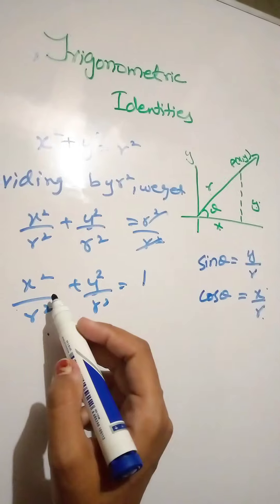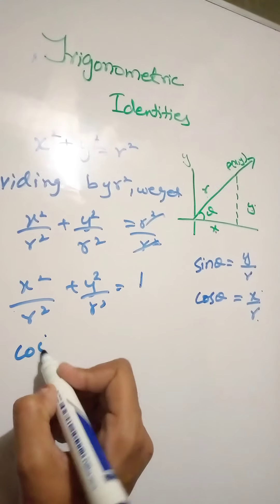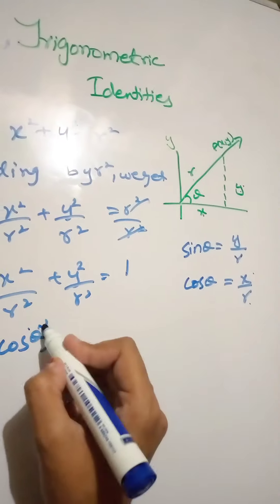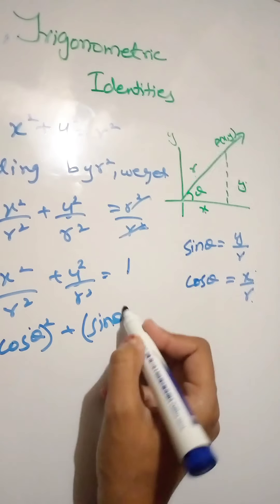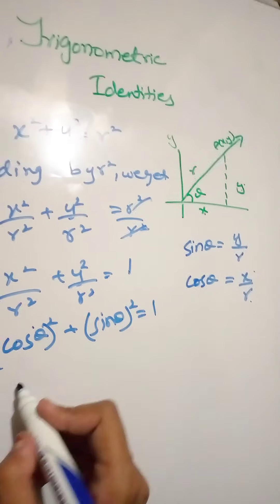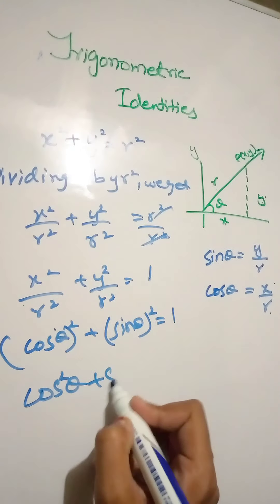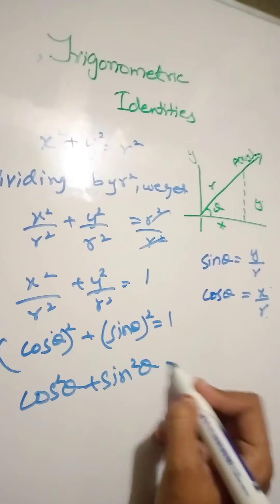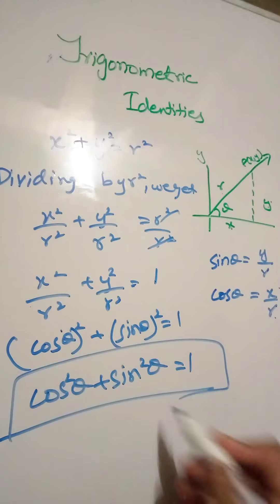That means we can put it here. So we have the first identity proof.